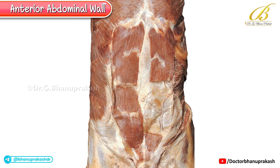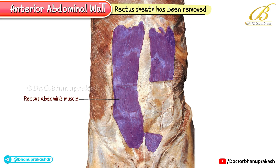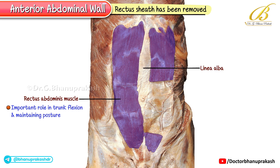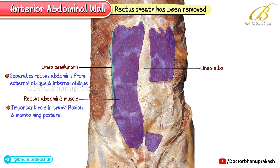In this image, on the right side the anterior wall of the rectus sheath has been removed, which exposes the rectus abdominis muscles underneath. The rectus abdominis is a paired muscle that runs vertically on either side of the linea alba along the anterior surface of the abdominal wall. It plays an important role in trunk flexion and maintaining posture. At the lateral edge of the rectus abdominis, you can identify a curved tendinous line called the linea semilunaris, which separates the rectus abdominis from the lateral abdominal wall muscles such as the external and internal oblique. Just above the pubis, you can see two small triangular muscles — one on each side — called the pyramidalis muscles. Though often considered minor, they help tense the linea alba.